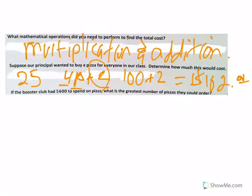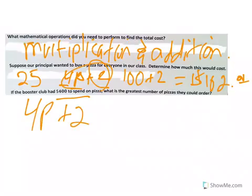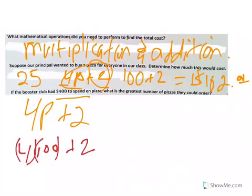Alright, if the Booster Club has 400 dollars to spend on pizza, let's just say that's kind of like the PTA, or it's kind of like Student Council. Booster Club has 400 dollars to spend on pizza. What is the greatest number of pizzas they could order? Okay, well, first thing I'm going to look at it, so I know it's going to be, again, we're using that 4P plus 2.